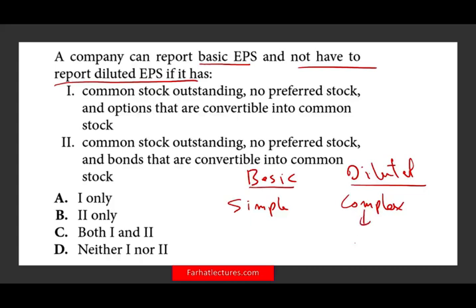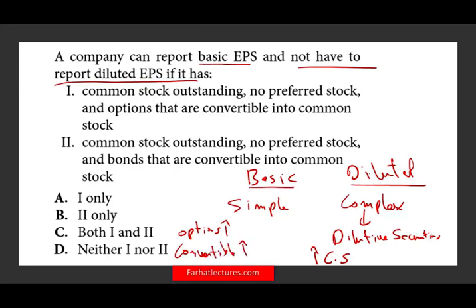You always have to report basic. When do you have a complex capital structure? You have a complex capital structure when you have any dilutive securities. What are dilutive securities? They are securities that could potentially increase your common stock — such as stock options, which if exercised could increase common stock, or convertible securities like preferred stock convertible into common, or convertible bonds. Those give you a complex capital structure, requiring you to compute diluted EPS.